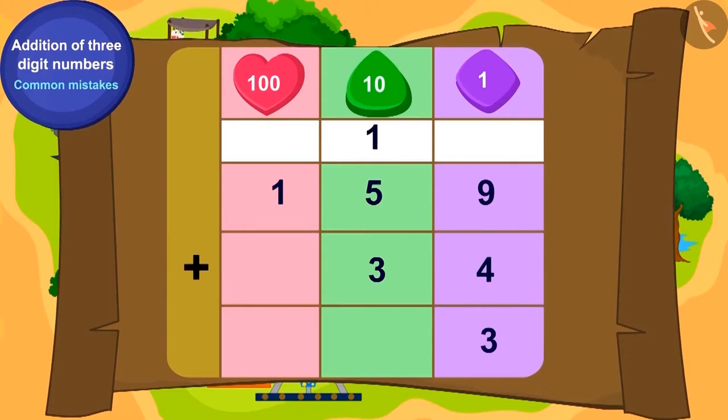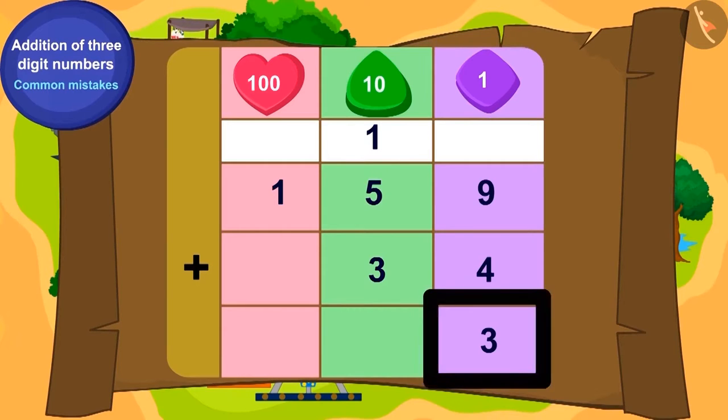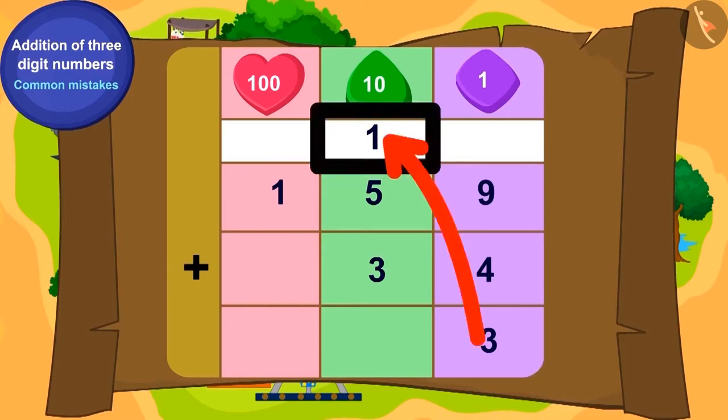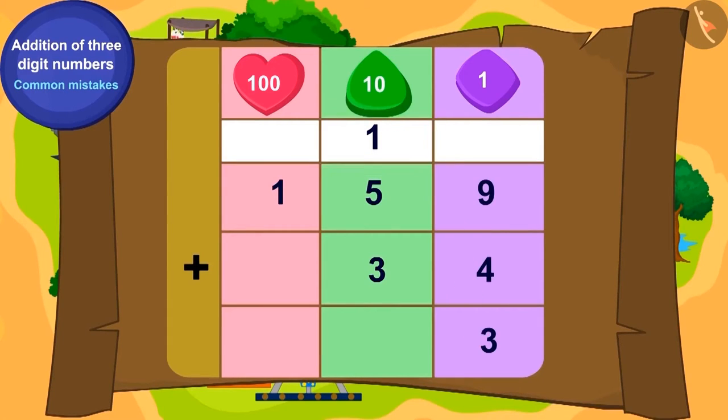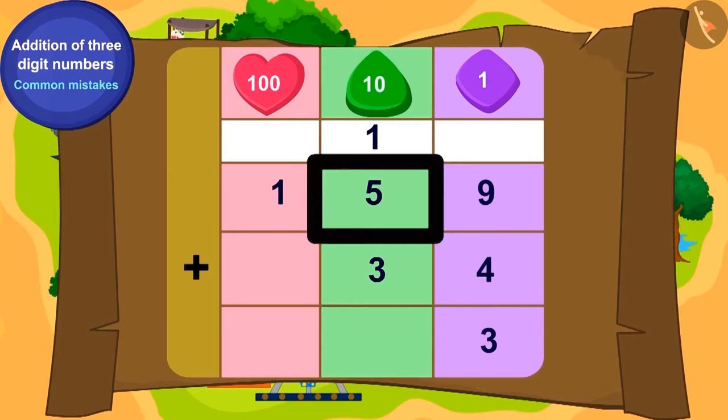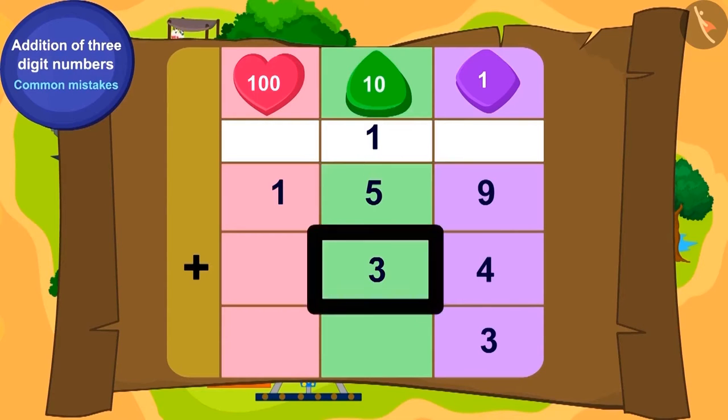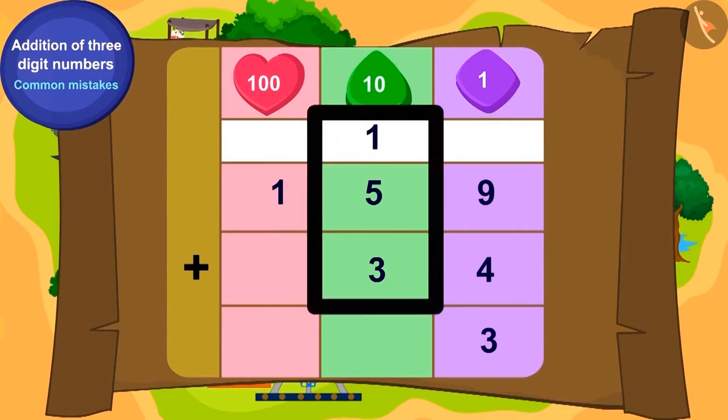Yes, for 13, you will write 3 in the ones position and carry over 1 to the tens place like this. Now, how much the total of carry-over added as 1 ten, 5 tens and 3 tens? 9!